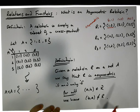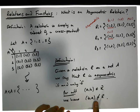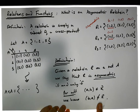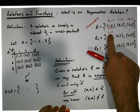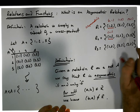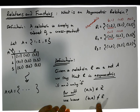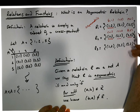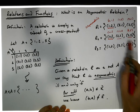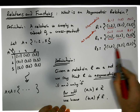Now let's check R2. The pair (1,1) flipped gives (1,1), which is in R2 — that violates the condition. Also, (2,2) flipped gives (2,2), which is also in R2 — another violation. When we look at (2,5) flipped we get (5,2), which isn't there, but we already have two reasons why R2 is not asymmetric.